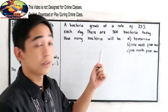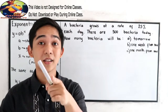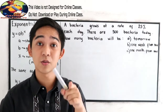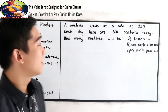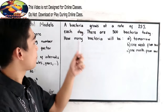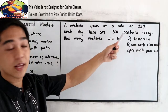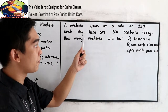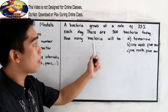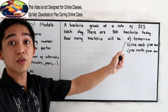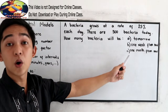To better understand our formula, let us try to solve this problem. The problem is: a bacteria grows at a rate of 25% each day. There are 500 bacteria today. How many bacteria will there be: A) tomorrow, B) one week from now, C) one month from now?